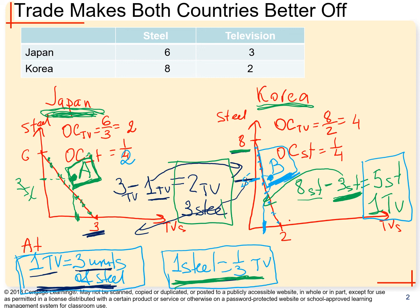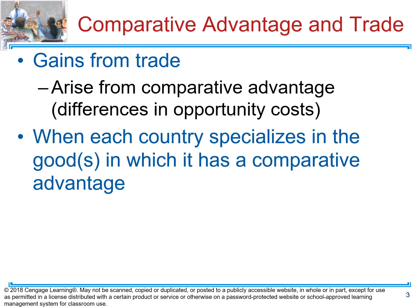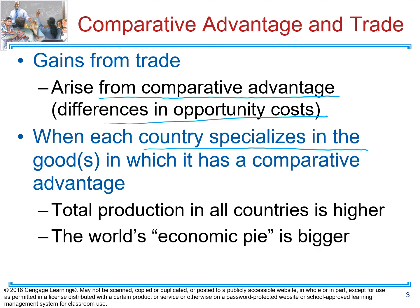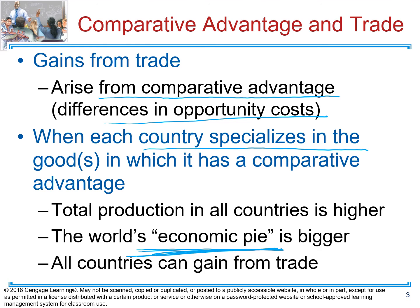This is how trade makes both countries better off — these are the gains from trade. Gains from trade arise because we apply comparative advantage: we look at each country's opportunity cost and specialize in production where we are most efficient. When we specialize in goods we produce at a lower opportunity cost, we increase our economic pie — we waste fewer resources — and therefore countries gain from trade.